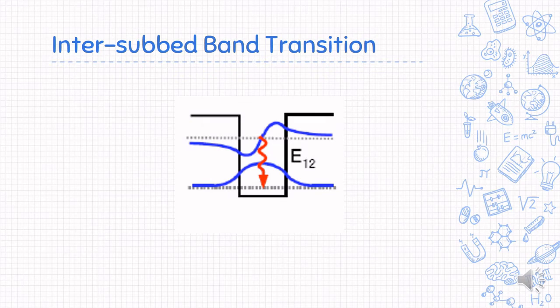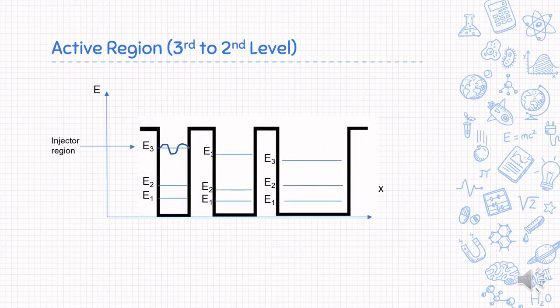Intersubband transition is where electrons travel between energy levels within a single quantum well, changing its wave function and releasing extra energy. The active region is designed such that the wave function from the injector resonates with E3 of the first quantum well, to ease tunneling. Then, electrons undergo intersubband transition to the E2 in the second well. How does it do this? There are two ways.